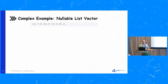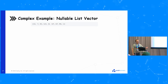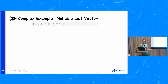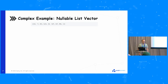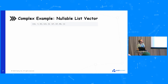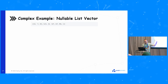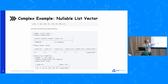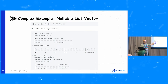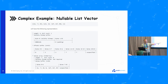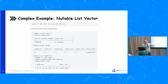Arrow can also do complex objects — not just scalars or simple lists of scalars. You can do nested lists of lists. If you have something like a nullable list of lists, it's similar to the previous example with scalars, but now you've got the offset buffer. As this gets more and more complex you end up with multiple buffers, and Arrow's job under the covers is to abstract all of this away from you as the developer using the vectors.